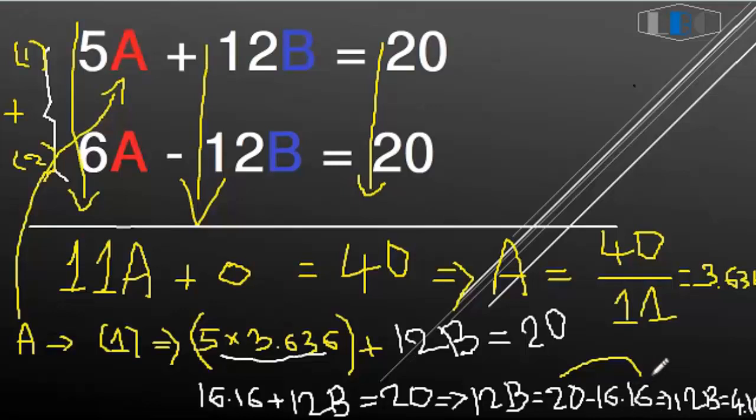So B equals 4.16 divided by 12. You can calculate and I'll have the answer for you.